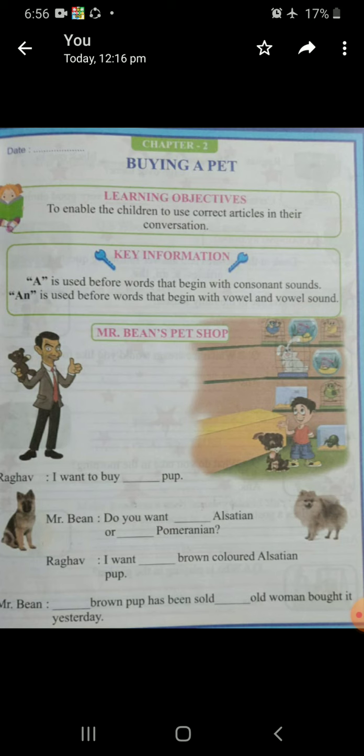Mr. Bean: A brown pup has been sold. Dash old woman — see, 'old' starts from O, and O is a vowel, so we will write An. Mr. Bean: A brown pup has been sold to an old woman who bought it yesterday.